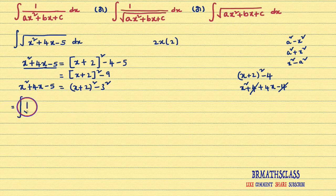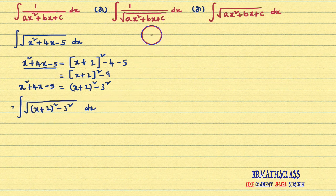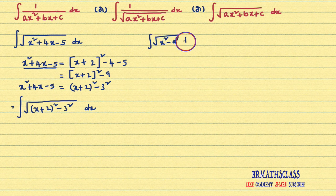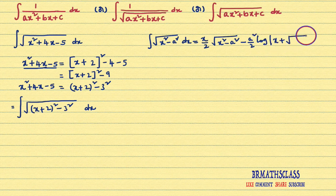That equals integral of square root of (x plus 2)² minus 3² dx. If you observe this integral, this is of the form: integral of square root of x² minus a² dx. The formula for this is: x by 2 into square root of x² minus a² minus a² by 2 into log mod of x plus square root of x² minus a² plus c. This is the formula we learned in previous classes.